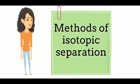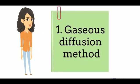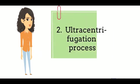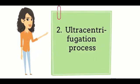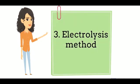There are three main methods of isotopic separation. The first one is the gaseous diffusion method. The second method is the ultracentrifugation process. The third method is the electrolysis method.